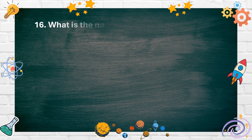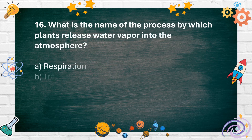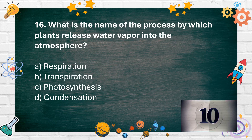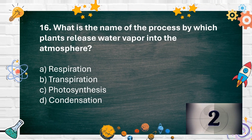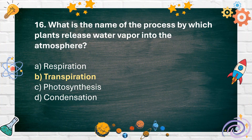Number 16. What is the name of the process by which plants release water vapor into the atmosphere? A. Respiration, B. Transpiration, C. Photosynthesis, D. Condensation. The answer is B. Transpiration.